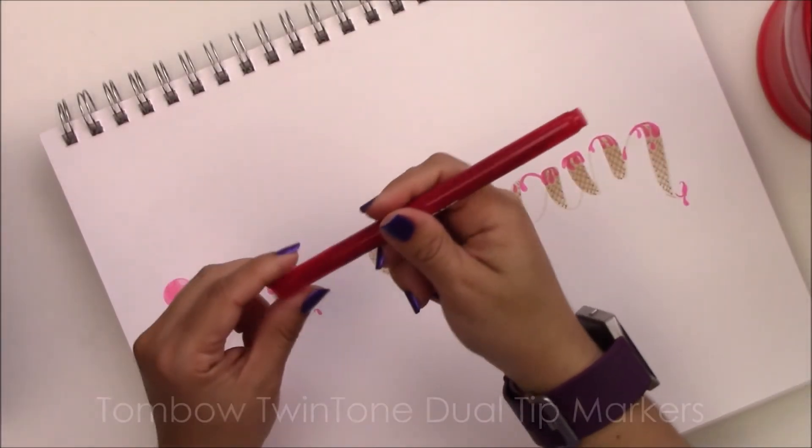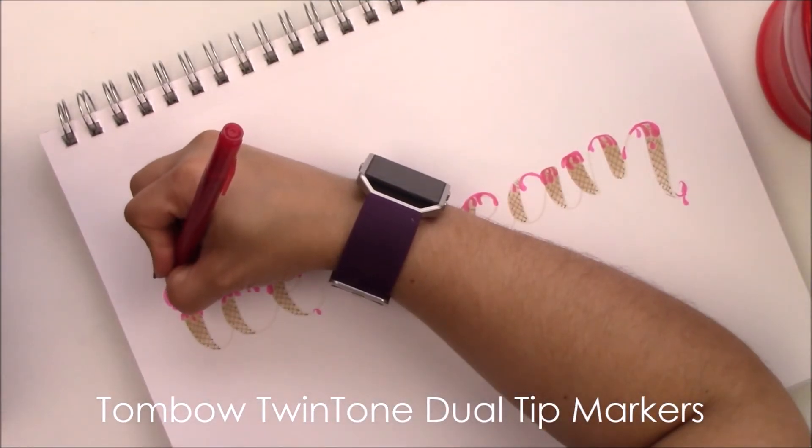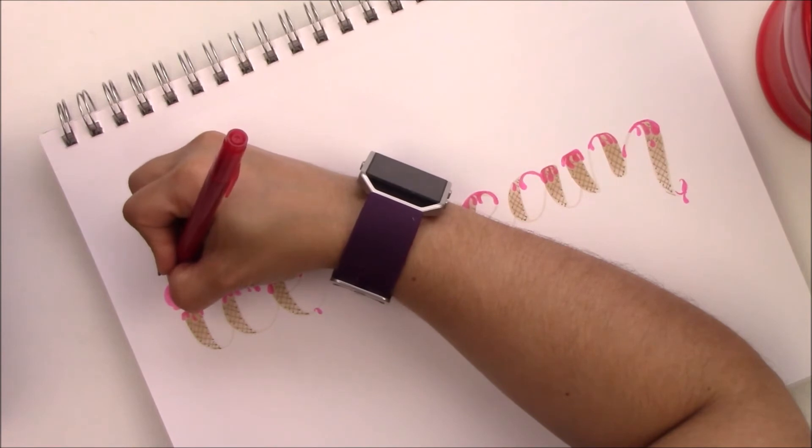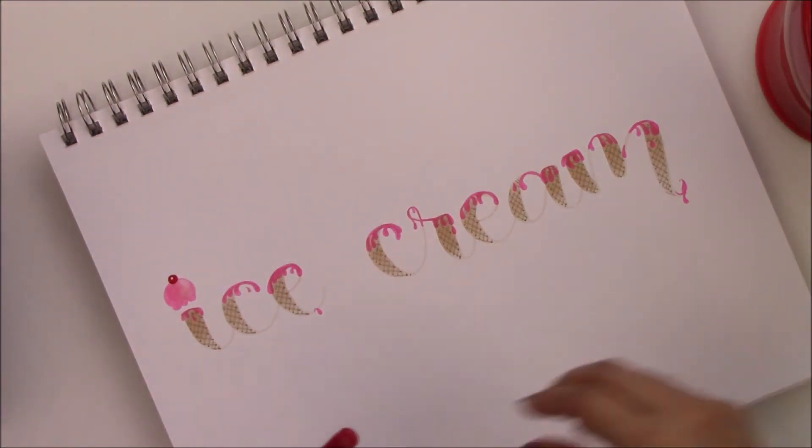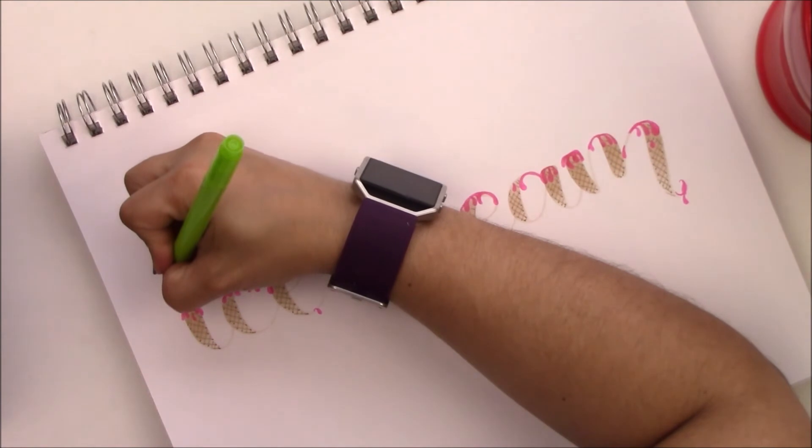Now I'm going to use the Tombow TwinTone dual tip markers. I'm going to use the fine tip to draw the sprinkles. And in the eye, I'm going to draw a cherry on top of the scoop. I'm making a circle and leaving one little white dot in the center. With the green one I'm just going to draw a little stem.